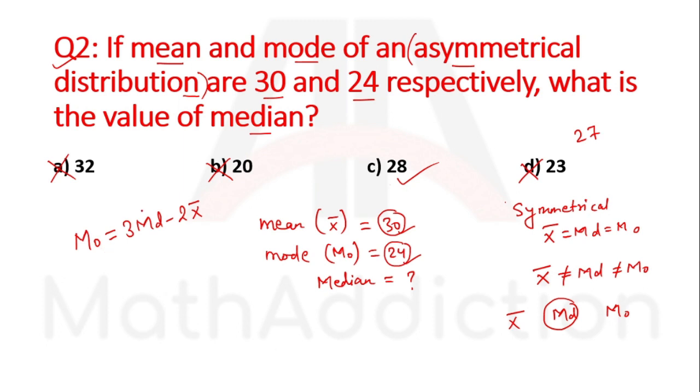Substituting values: 24 equals 3 times median minus 2 times 30. So 24 equals 3 times median minus 60. Add 60 to both sides: 84 equals 3 times median. Divide by 3: median equals 28. So option C, 28, is the answer.